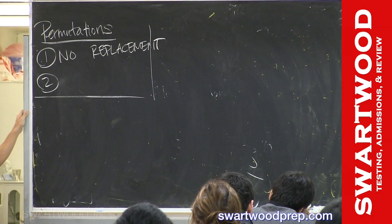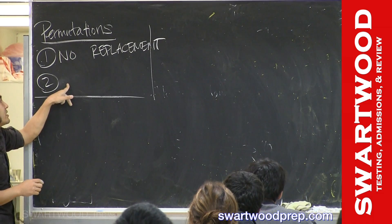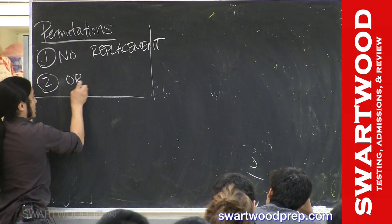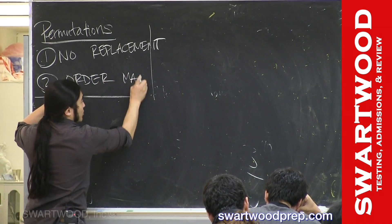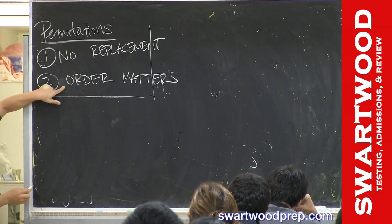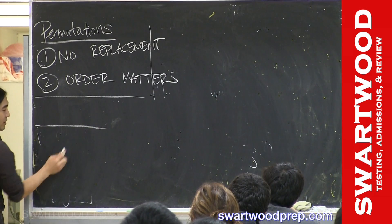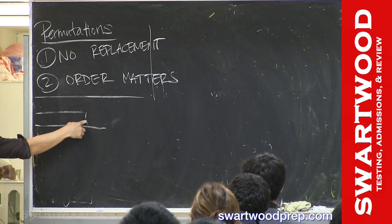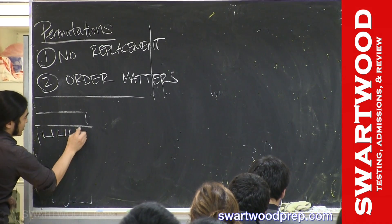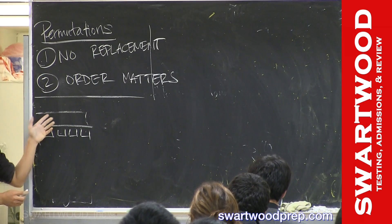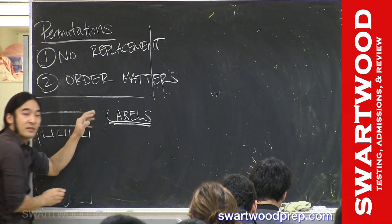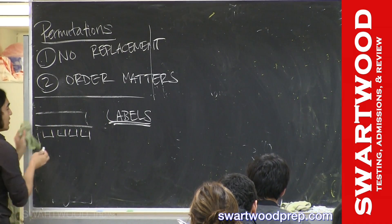Don't worry too much about memorizing this, I just need to put it up to be formal. The second thing that separates permutations from combinations is that order matters. The easiest way to think about it: if you line people up in a line, the left-hand side is different from the right-hand side, so order matters. When you see people at a table, someone seated to your left versus your right — order matters. The hidden fact is: whenever you see labels, that implies order.